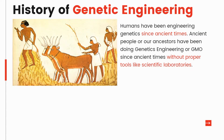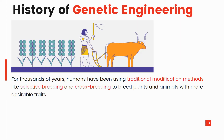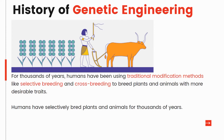The history of genetic engineering: humans have been modifying genetics since ancient times. For thousands of years, humans have been using traditional modification methods like selective breeding and crossbreeding to breed plants and animals with more desirable traits. Humans have selectively bred plants and animals for thousands of years.